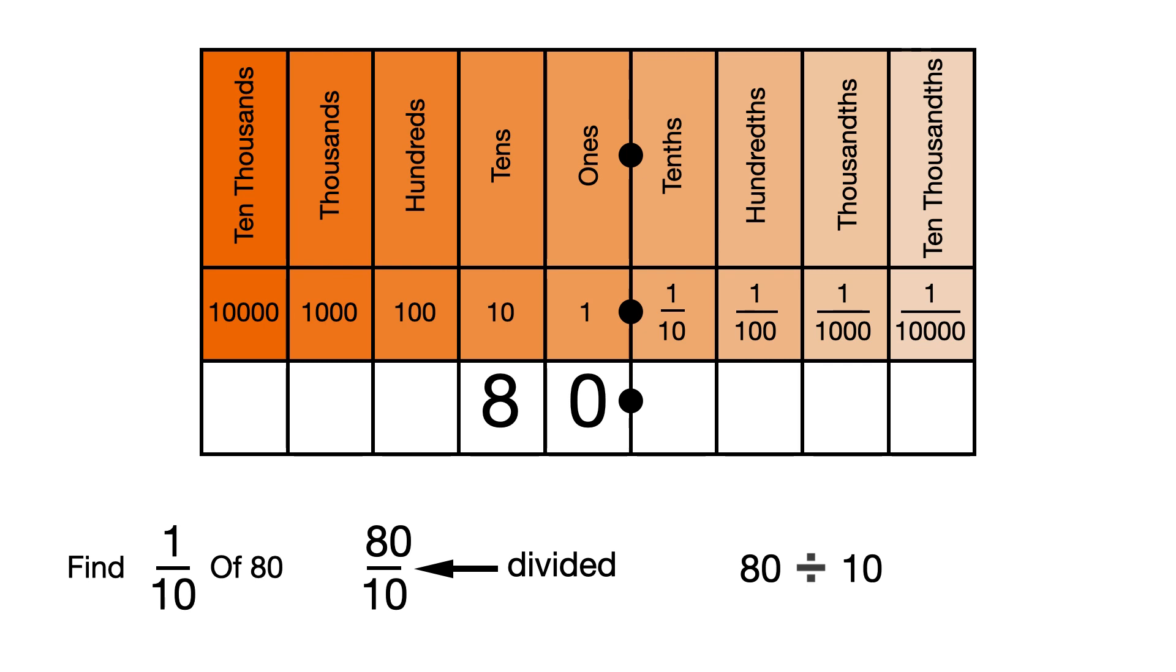To divide by 10, we move the digits one place each to the right. So 1 tenth of 80, or 80 divided by 10, is 8.